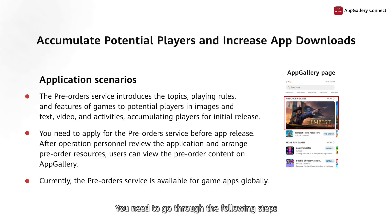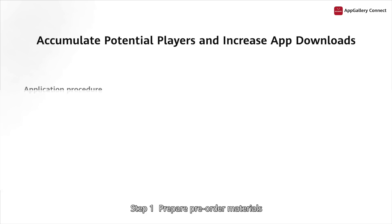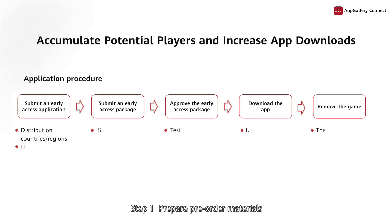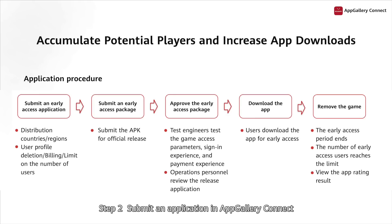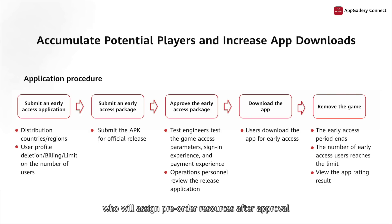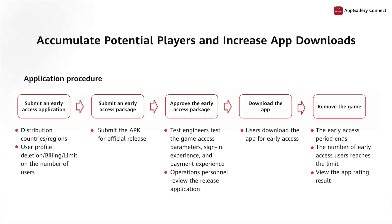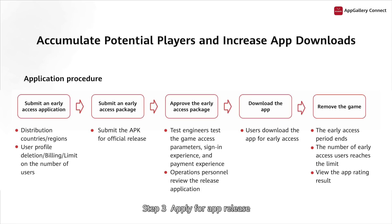You need to go through the following steps to use this service. Step one: prepare pre-order materials. Step two: submit an application in AppGallery Connect. Your application will be reviewed by operations personnel who will assign pre-order resources — which are actually slots on the client — after approval. You may also modify the application as needed. Step three: apply for app release.